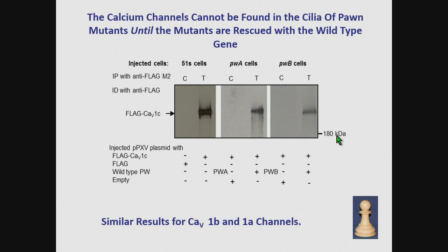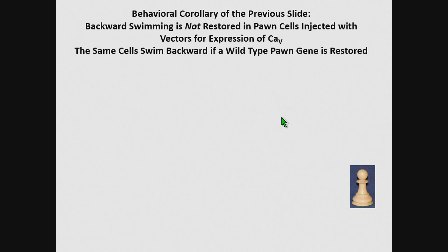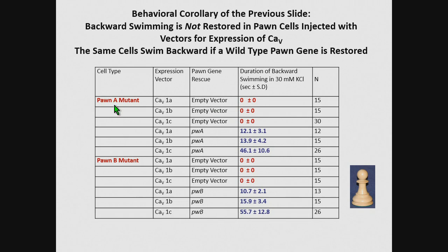We get identical results for the other two channels. There's a behavioral corollary for this: backward swimming is not restored in Poin cells unless they're transformed with both the channel and the wild-type Poin gene. Here you see the numbers. Poin-A mutant, Poin-B mutant: if you take a Poin-A mutant and transform it with any of these three channels but use an empty vector otherwise, you get absolutely no backward swimming. When you transform with these three channels and also transform with the Poin gene, you get lots of backward swimming. Same with Poin-B: transform with the channel alone, you get no backward swimming; transform with the Poin gene as well, then you get lots of backward swimming.